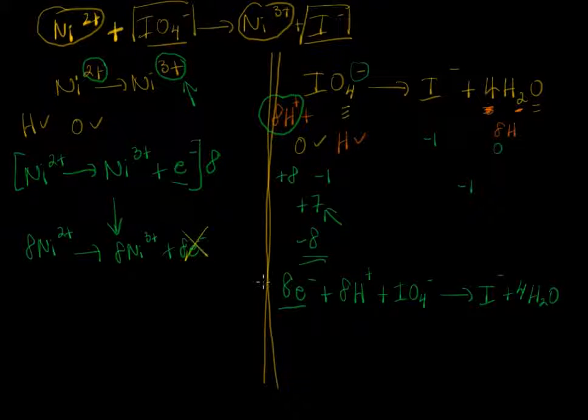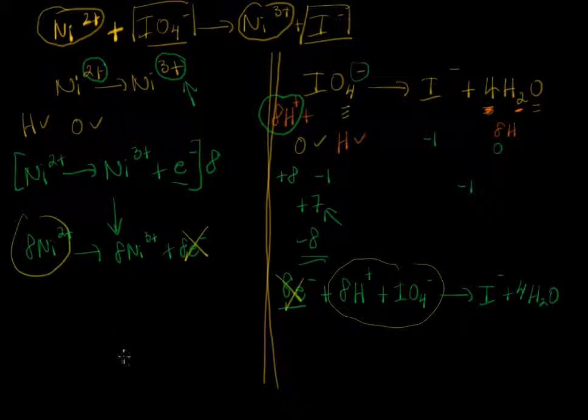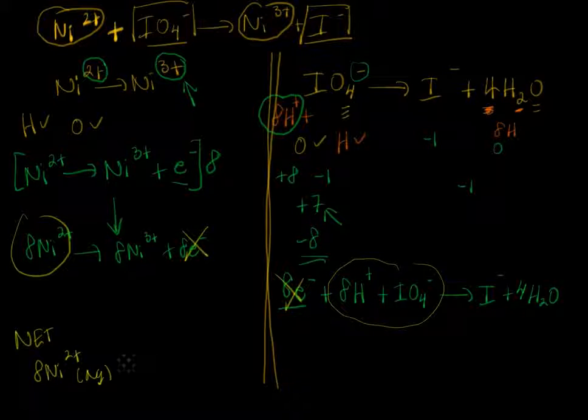Now I'm running out a little bit of space here, so I'm just going to cancel out the electrons and add these two halves together, so all the left hand side stuff goes on the left. The net equation, the net redox equation, is going to be 8 nickel 2 plus, that's aqueous, I'll put the states on here at the final, plus 8 H plus, plus IO4 negative, that's aqueous, and that yields...